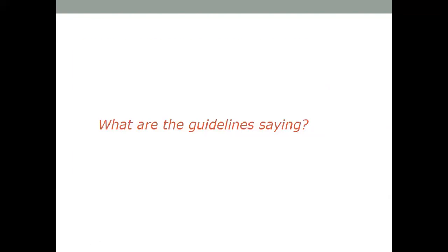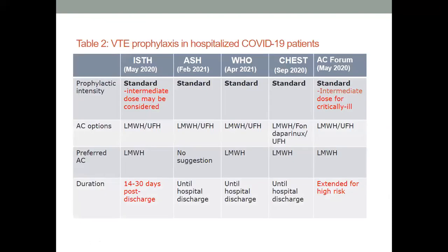With regard to guidelines, you can refer to many, but the most leading ones include the International Society of Thrombosis (ISTH), the American Society of Hematology (ASH), WHO, CHEST, and the Anticoagulation Forum — these are by far the leading sources of guidance for anticoagulation practice generally and for COVID-19 associated anticoagulation specifically.